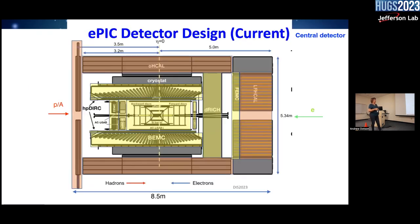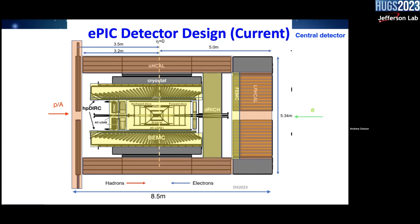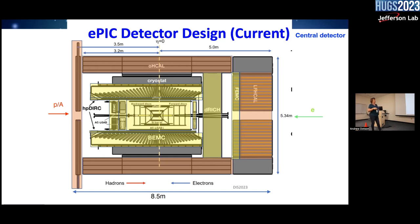Here is a picture of the central detector — this is about half a year old and recently we had to modify the electromagnetic calorimeter in the barrel. The dimensions: 8.5 meters total. The IP is in the middle — protons coming from one side, electrons from the other. It's asymmetric: 3.5 meters for the electron side and five meters for the hadron side, due to the boost of the kinematics along the proton direction.